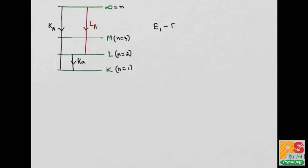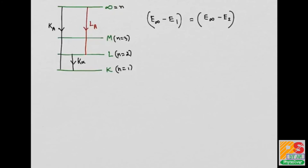We write the energy from the infinite state to the 1 state as: E(infinity→1) = E(infinity→2) + E(2→1). This energy decomposition allows us to relate the K absorption edge, L absorption edge, and K alpha line wavelengths.